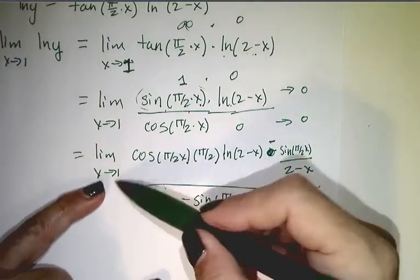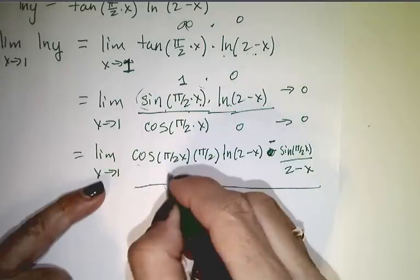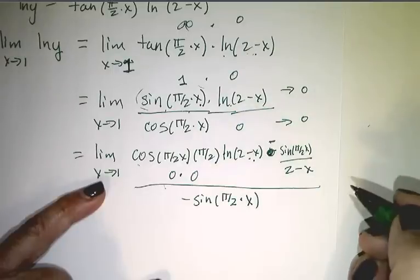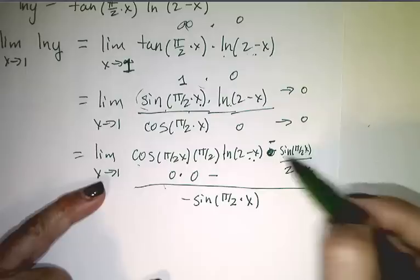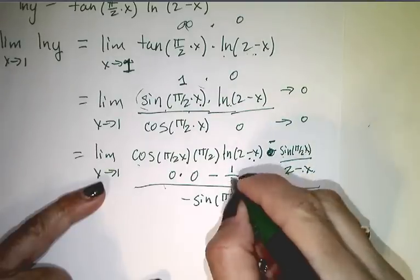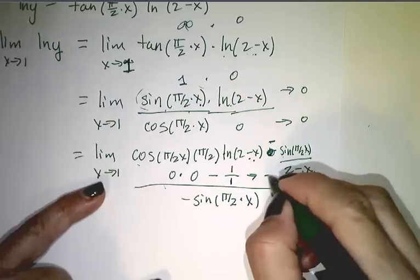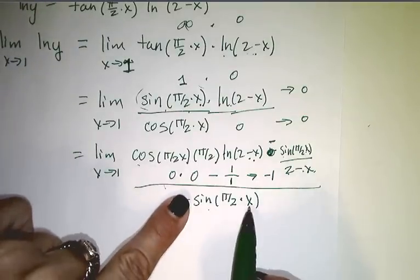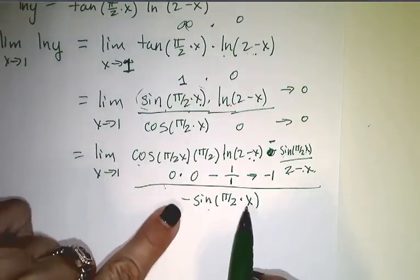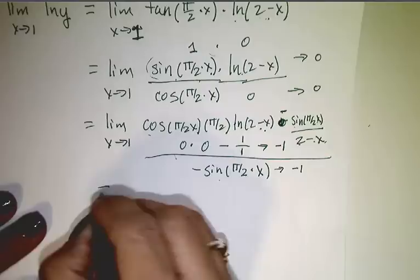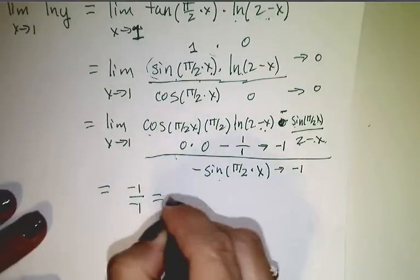As x goes to 1, the cosine of pi over 2 goes towards 0, so that first piece is 0. This one also goes to 0, so that piece is 0 as well. Minus sine of pi over 2 as x goes to 1 is 1, over 2 minus 1, which is 1. So the top is actually headed towards minus 1. The bottom: sine of pi over 2 times 1 is 1, so the bottom goes towards minus 1. This limit goes to negative 1 over negative 1, which is 1.